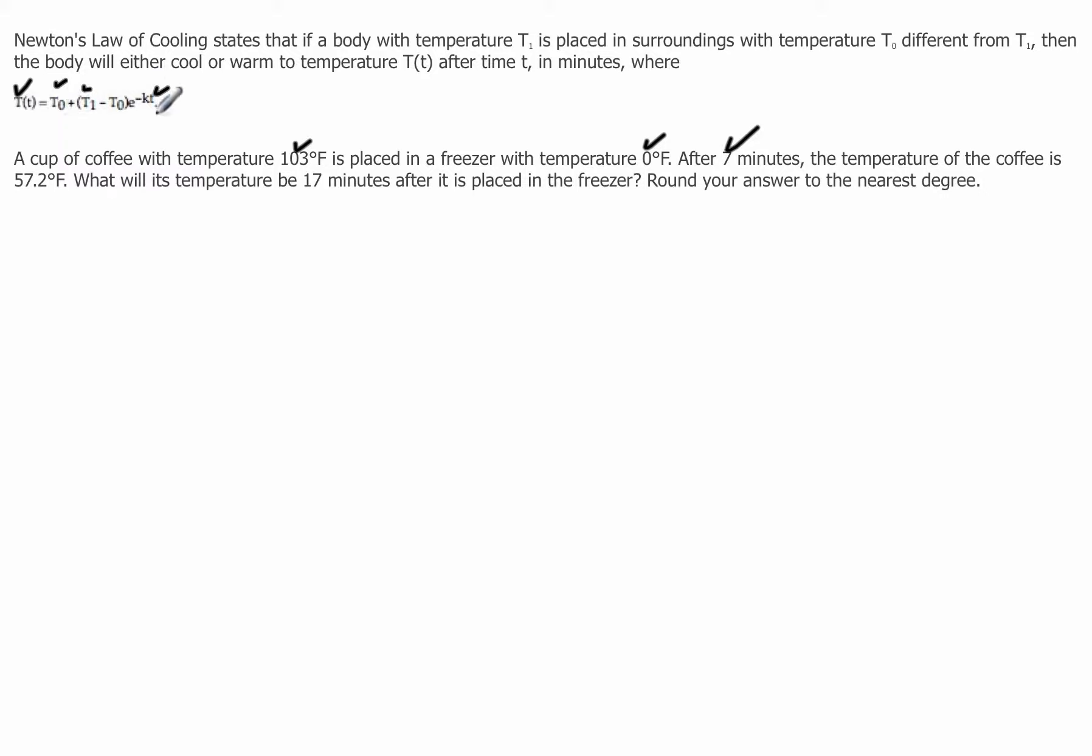And it looks like I've got an equation where all I have is a K that I don't know. But then they asked me another question. So let me write out my formula. Temperature after a given time is equal to T₀. A body with temperature T1 is placed in surroundings with temperature T0, so this would be the freezer.